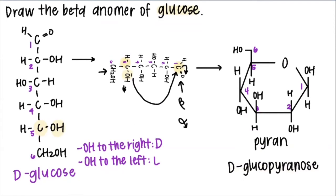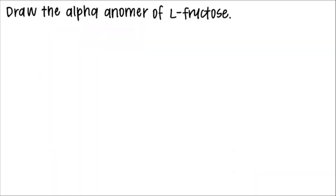Once you're done filling everything in, the sugar is drawn and you've drawn D-glucopyranose. Now let's draw the alpha anomer of L-fructose.